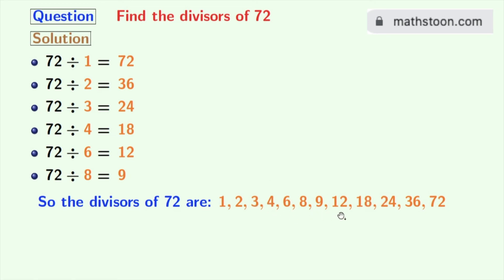Now if we look at these divisors, we can see that 2 and 3 among these numbers are prime numbers. Because these two numbers do not have any divisor other than 1 and this number itself. So we can say that the prime divisors of 72 are 2 and 3.